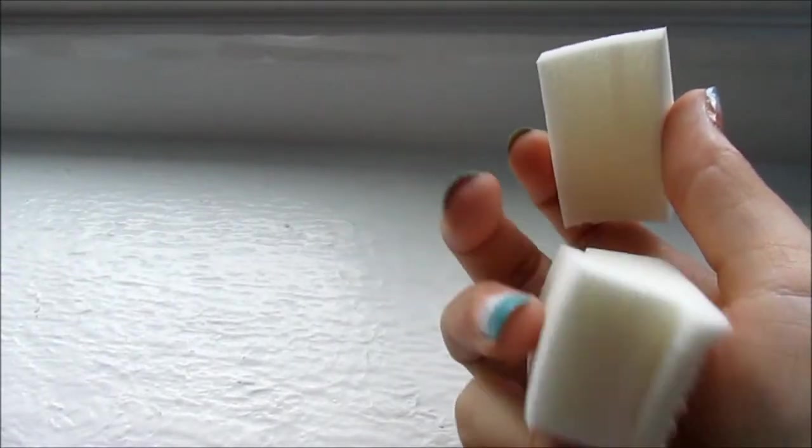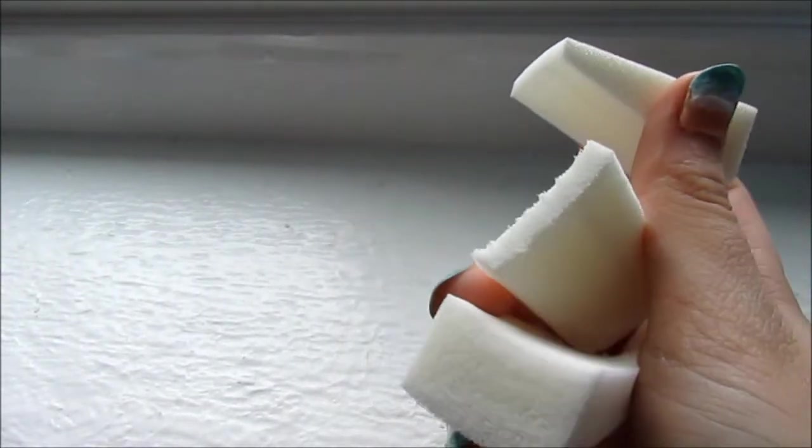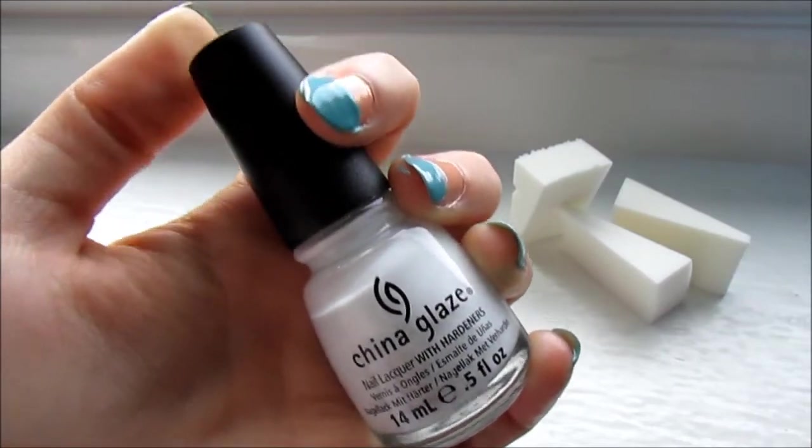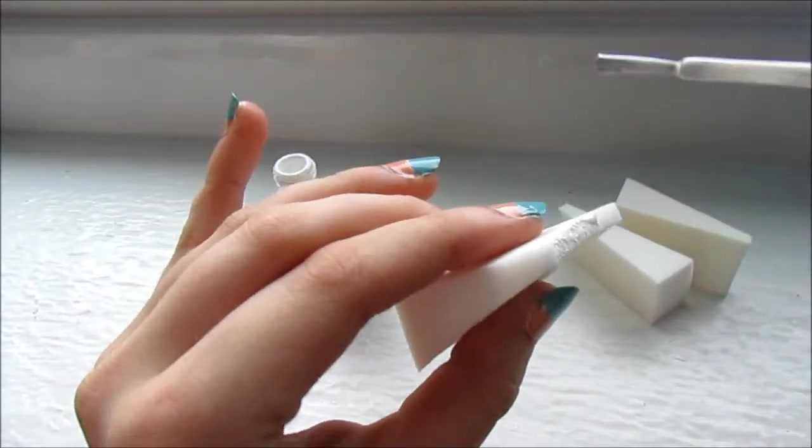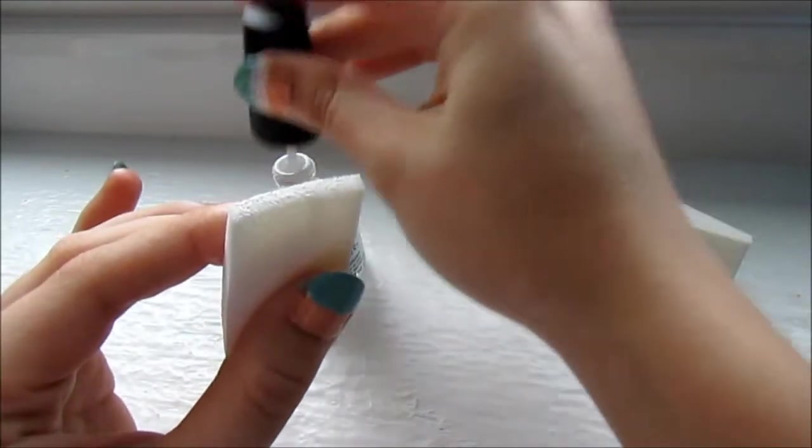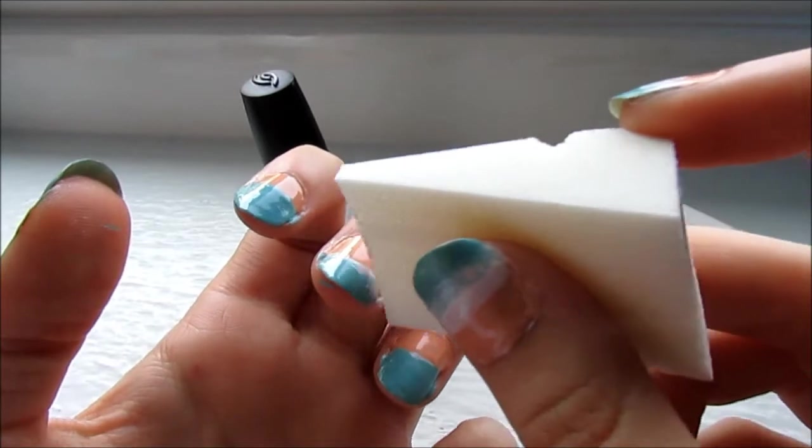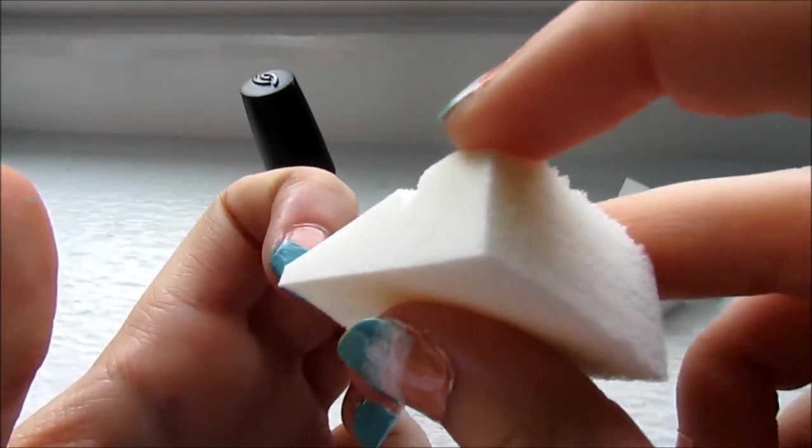Next grab your cosmetic wedges and the white nail polish you used from the first step. Dab some of the white nail polish on the edge of the cosmetic wedge. Now dab the wedge on the middle part of your nail.